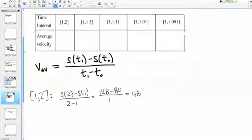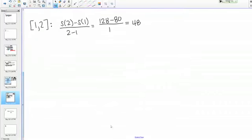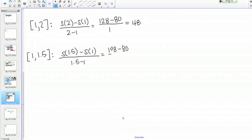We need to do all these other intervals as well. Next we have [1, 1.5], so that's S(1.5) - S(1) over 1.5 - 1, which gives 108 - 80 over 0.5, which equals 56.